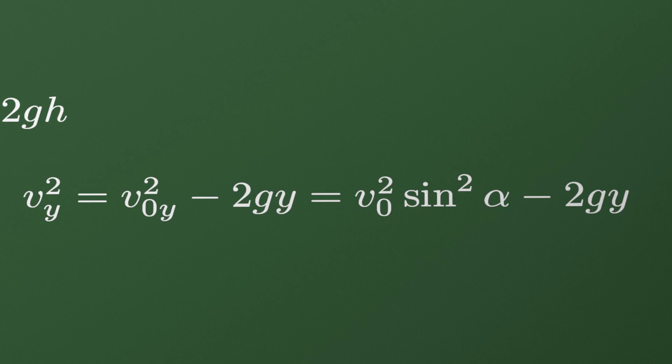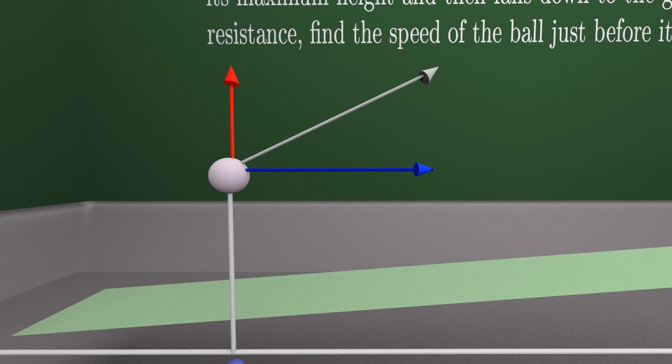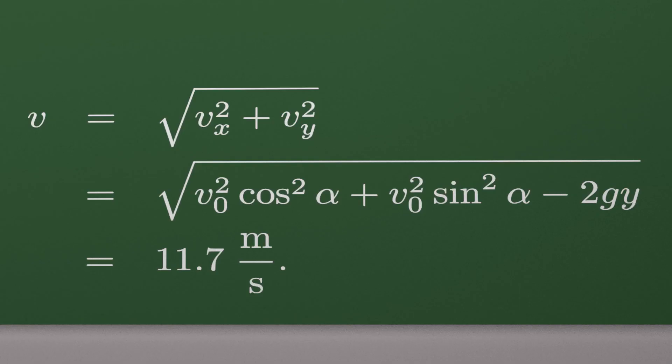So now we have Vx and Vy, and we can calculate the speed in this point here. And it is given by this here. So V is equal to square root of Vx squared plus Vy squared, and it is equal to 11.7 meters per second.